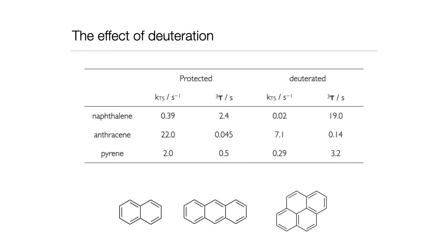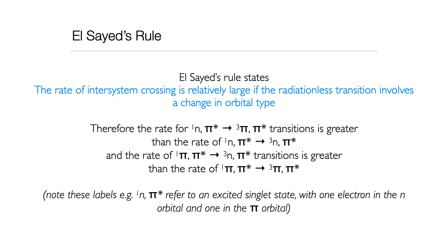So, by deuterating my sample, I'm making my excited triplet state here more stable. There is another thing that I need to consider here when I'm thinking about non-radiative processes, and that is something called El-Sayed's rule. El-Sayed's rule is specifically linked to intersystem crossing. And it is saying that if I can have a change in orbital type for the radiationless transition, the radiationless intersystem crossing, then the rate of that process is going to be greater.